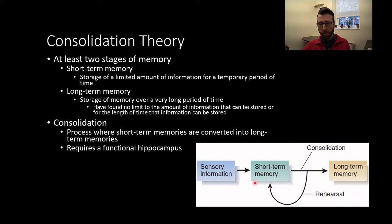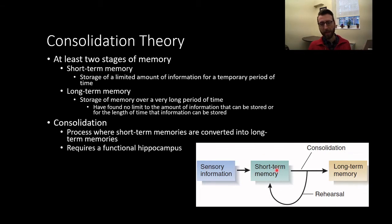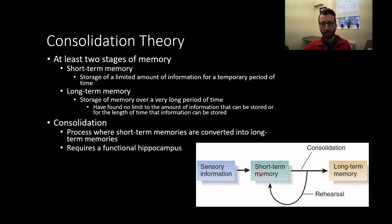We're not going to talk too much about short-term memory in this course. You can think of short-term memory as sort of what you're aware of right now — your conscious awareness, the things you're remembering and thinking about, or things that have come in from your sensory information. Things in your short-term memory can be kept there as long as you continue to think about them or rehearse them. For example, if I give you a seven-digit number sequence like a phone number and you repeat it to yourself, you're keeping it active in your short-term memory through an active elaborative rehearsal process.